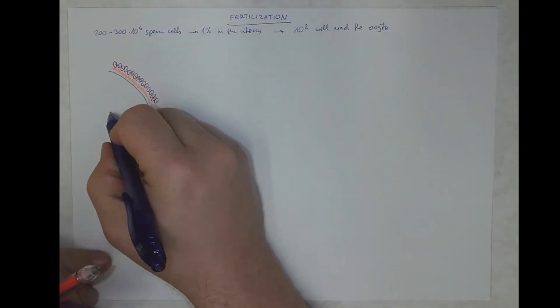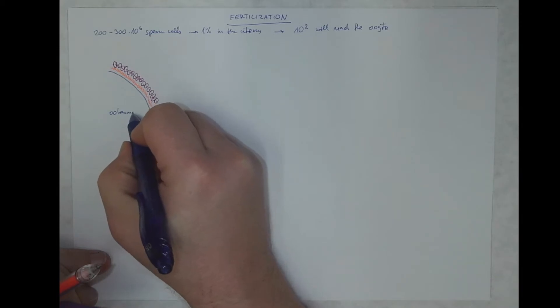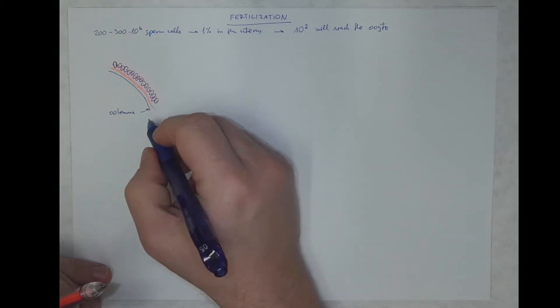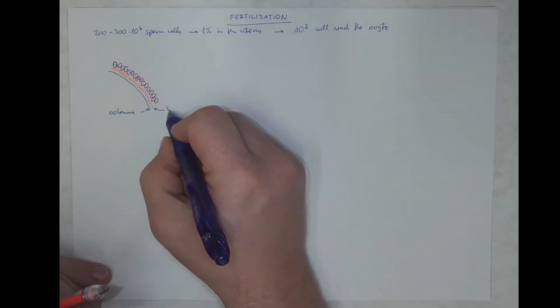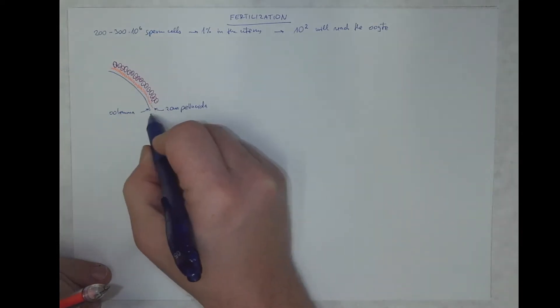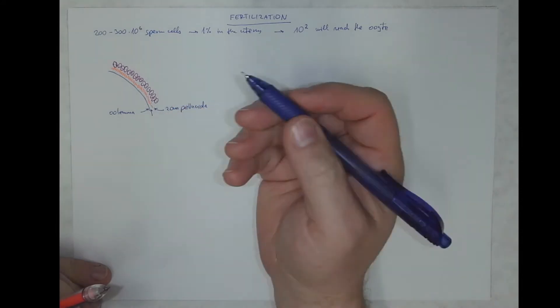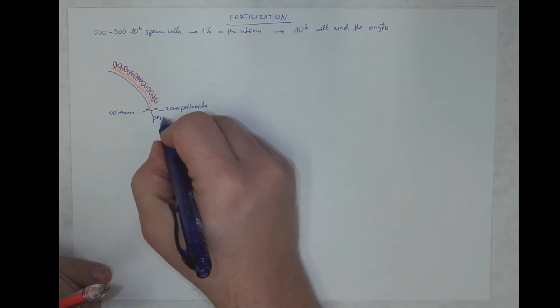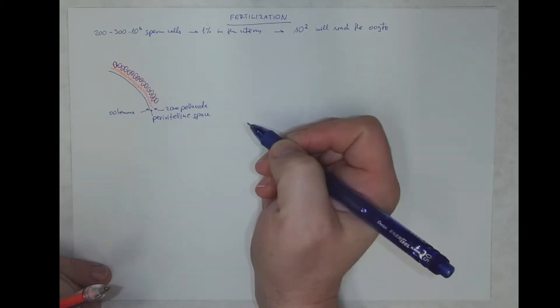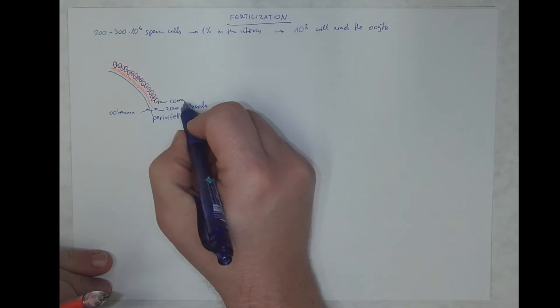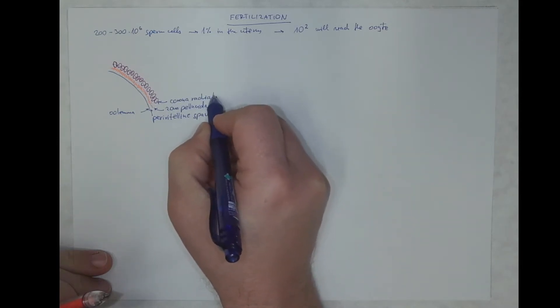So this will be the oolemma. Oolemma is just another word for the cell membrane of the oocyte. This is the zona pellucida. Between oolemma and zona pellucida there is a tiny potential, more or less potential space called perivitelline space.